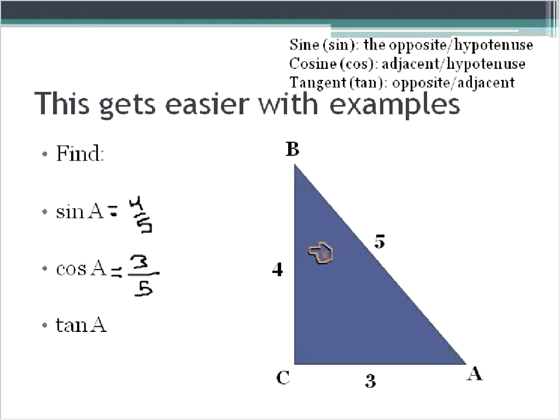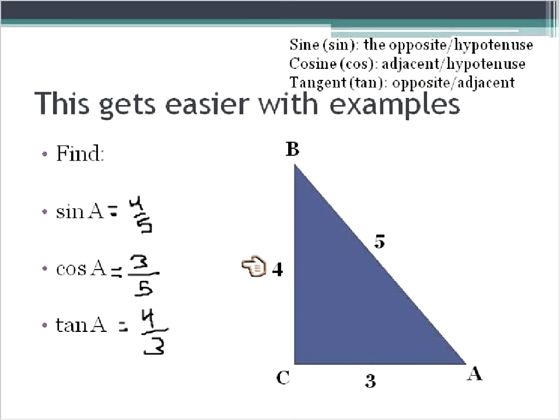The next part is the tangent, which is the opposite over the adjacent. So the tangent of A is 4 over 3. So that's essentially what we're looking at. We're looking at ratios of these sides of the triangle.